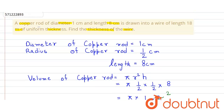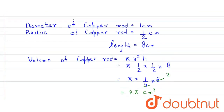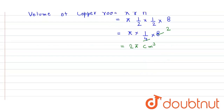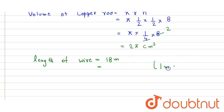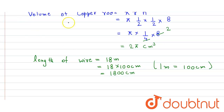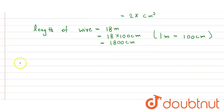The volume of the copper rod will be equal to the volume of the wire. The length of the wire is 18 meters, so we first convert this into centimeters because the volume is in centimeter cube. Using the conversion 1 meter equals 100 centimeter, 18 meters becomes 1800 centimeter.